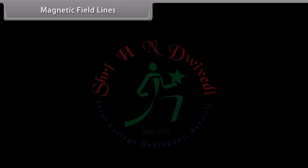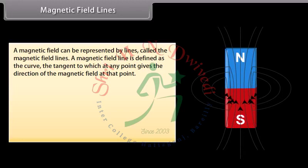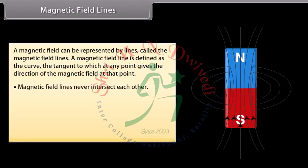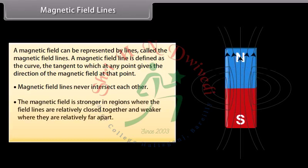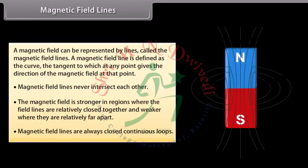Magnetic field lines: A magnetic field can be represented by lines. A magnetic field line is defined as the curve, the tangent to which at any point gives the direction of the magnetic field at that point. Magnetic field lines never intersect each other. The magnetic field is stronger in regions where the field lines are relatively close together, and weaker where they are relatively far apart. Magnetic field lines are always closed continuous loops.